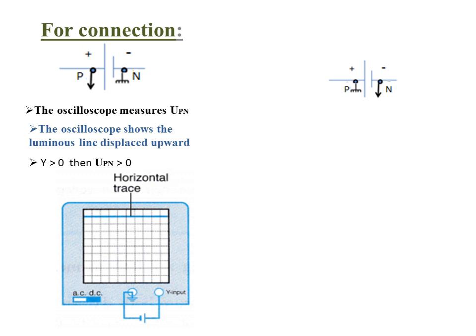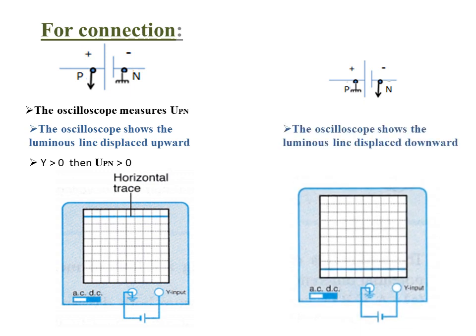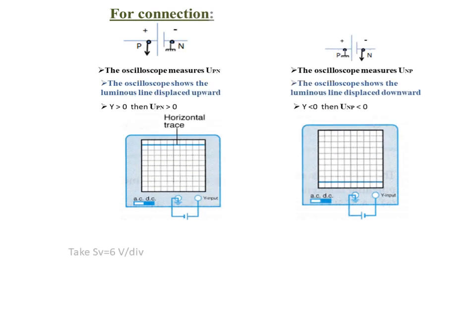In another case, if we reverse the connection of the oscilloscope — the phase terminal connected toward the negative terminal and the ground connected toward the positive — then the oscilloscope shows the luminous line displaced downward below the x-axis. The oscilloscope then measures U_np, and since Y is less than zero, U_np is less than zero.